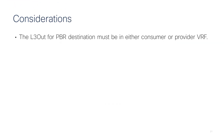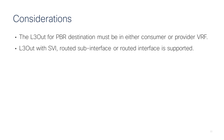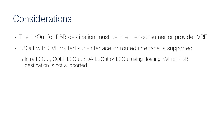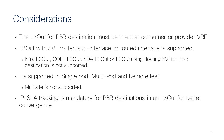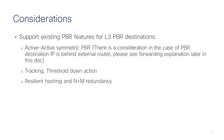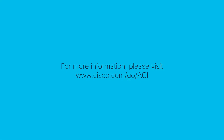The L3 out for PBR destination must be in either the consumer or provider VRF — you can't use another VRF that is not involved in the contract. You can use L3 out with SVI, routed sub-interface, or routed interface, but not floating SVI or other specific types of L3 outs. This feature is not supported in multi-site. IPSLA tracking must be enabled for the PBR destinations. These existing PBR-related features are supported the same as with PBR destinations in bridge domain. For more detail, please check the deployment guide and white paper. Thank you for watching.